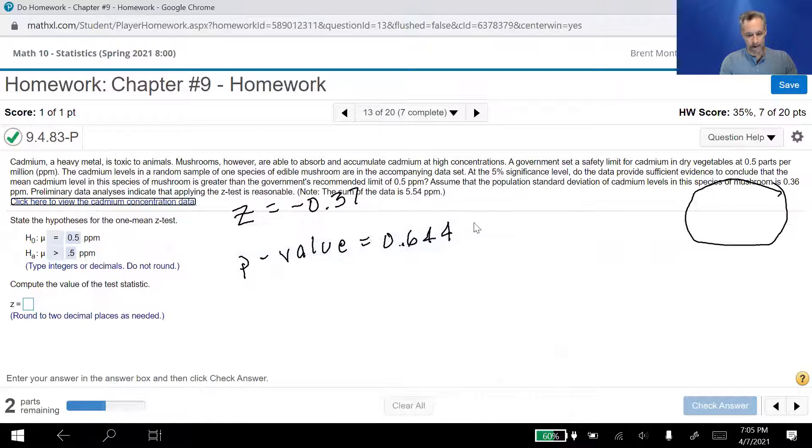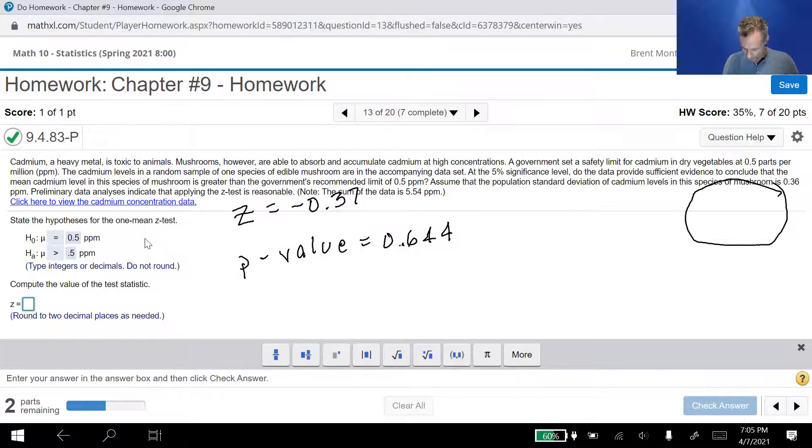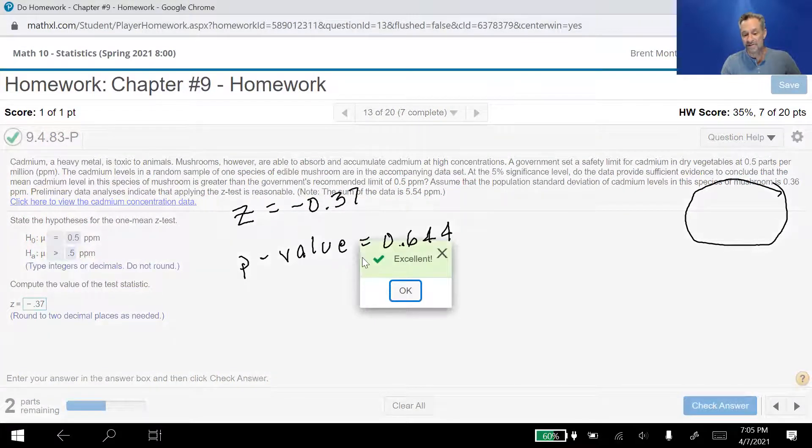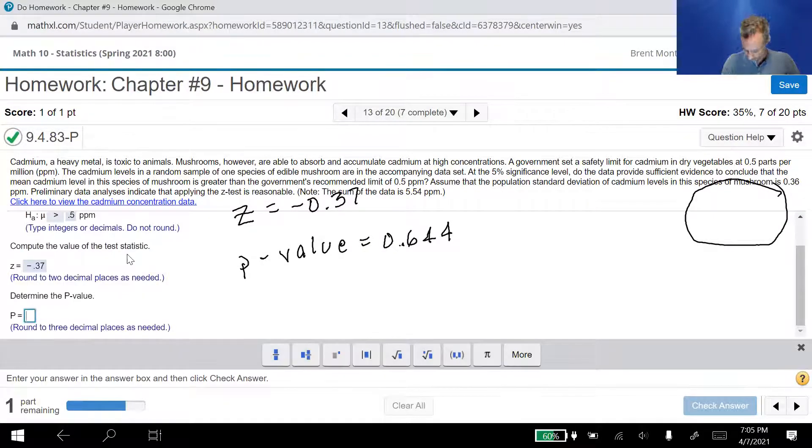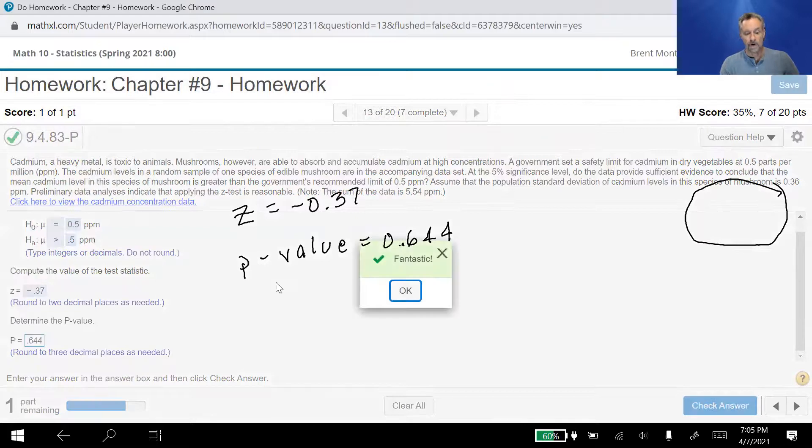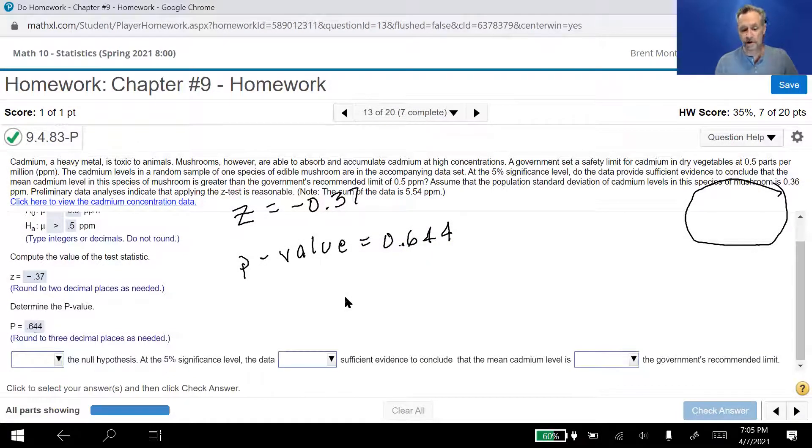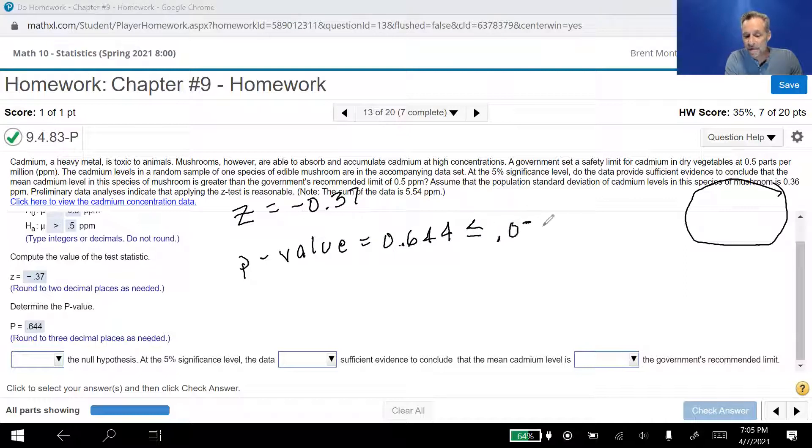Alright, we don't need that anymore. The Z value to two decimal places, negative 0.37. And notice I usually don't put the Z in front. And then the P value was 0.644. Alright, now here's what we do. Here's how we get to the conclusion of our test. We take that P value and we compare it to the significance level. We want to know if that's less than or equal to 0.05, which was my significance level alpha. Clearly, that's not less than 0.05, because that's 64.4%, not less than or equal to 5%. So that's not less than or equal to. So we say do not reject the null hypothesis.